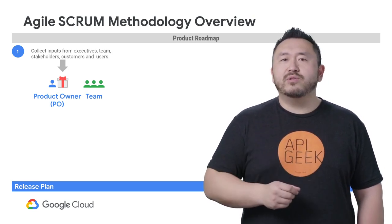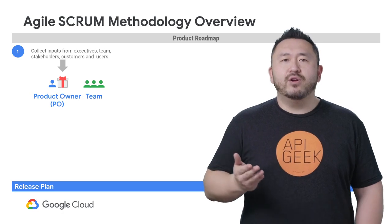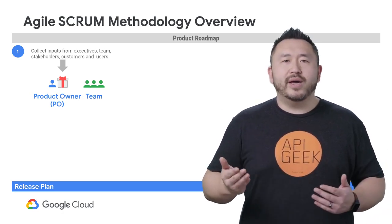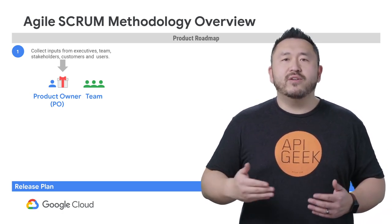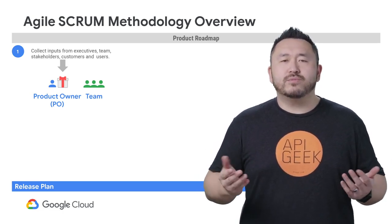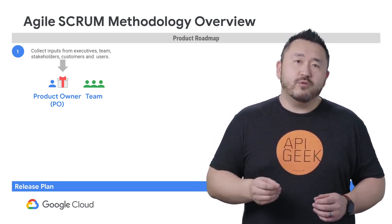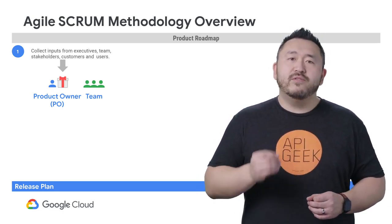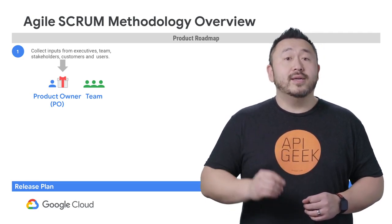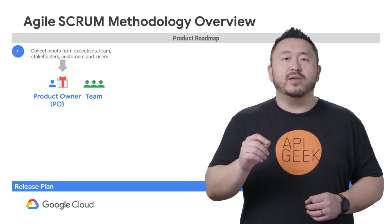This roadmap could include different sets of APIs, business adoption, app usage, key compliance efforts, infrastructure, and even improvements to the developer portal. With a product roadmap, focus on what will be the first valuable release — keep in mind the MVP principle.